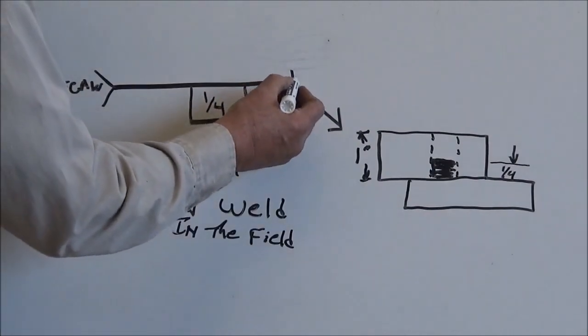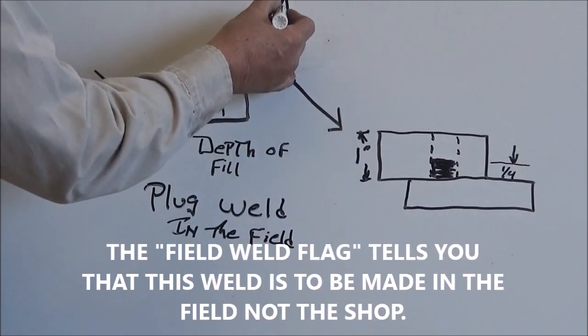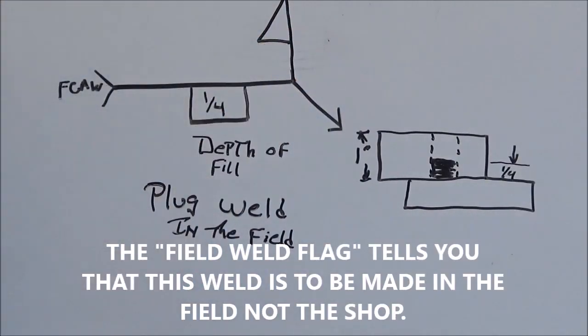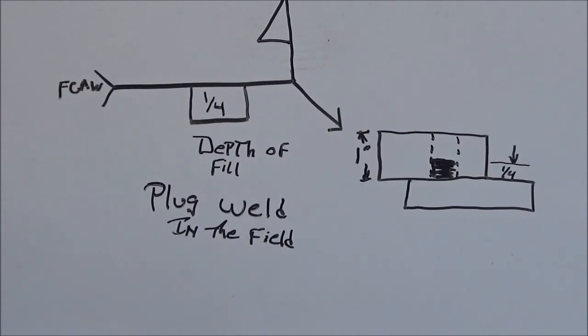I'm going to add this to it, which is a flag, and that flag will tell you that this weld is to be made in the field. So it is a plug weld made in the field with flux core arc welding to a depth of one quarter inch.